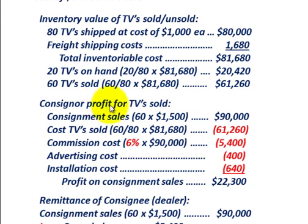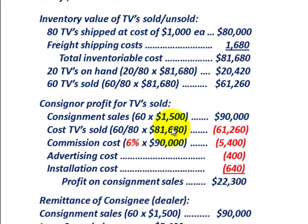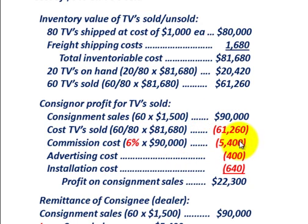Now let's look at the consignor's profit on the TVs that are sold. For consignment sales, 60 TVs were sold at a sales price of $1,500 each, so total consignment sales were $90,000. The cost of the TVs sold — which we calculated above, 60 of the 80 times $81,680 — is $61,260. They also had to pay the commission cost: 6% times $90,000 in sales equals $5,400.